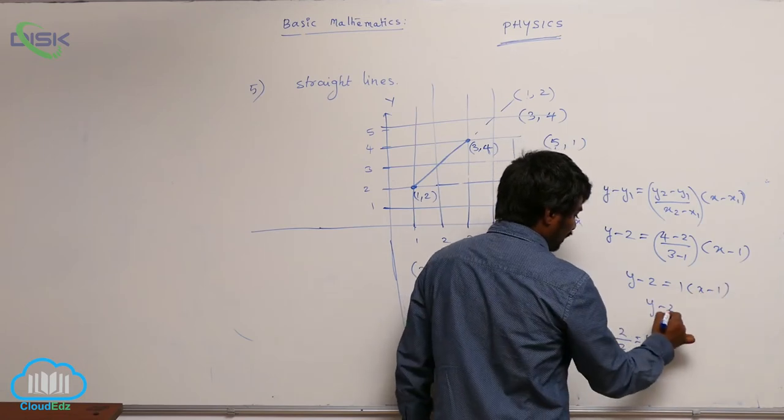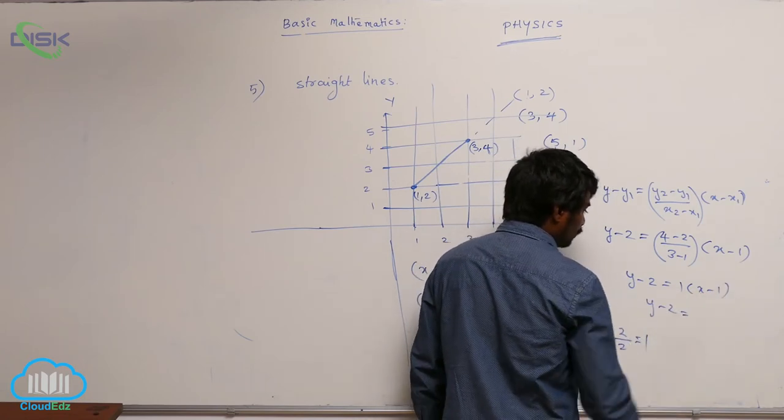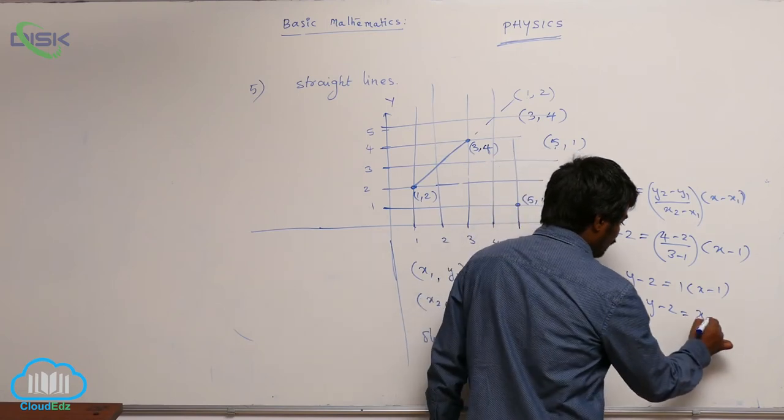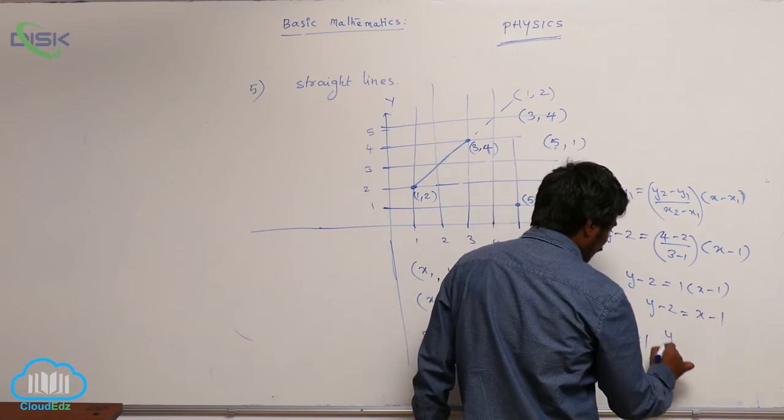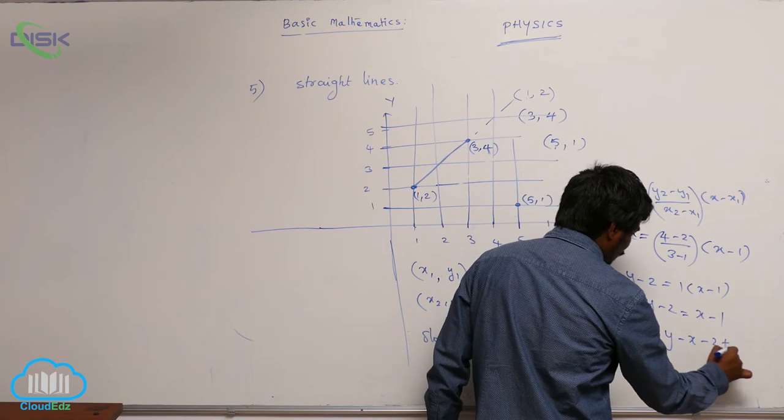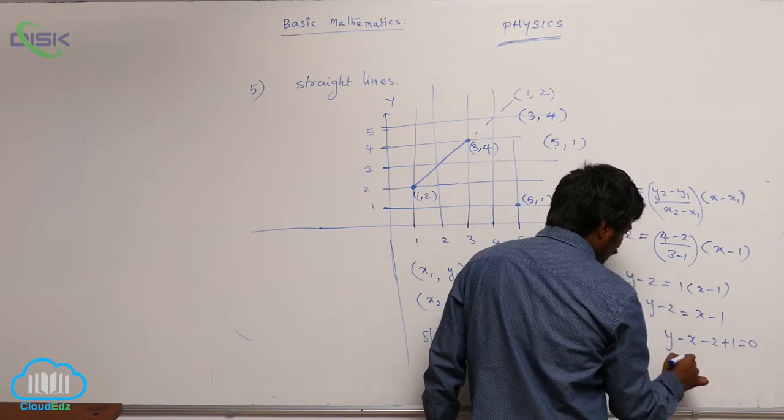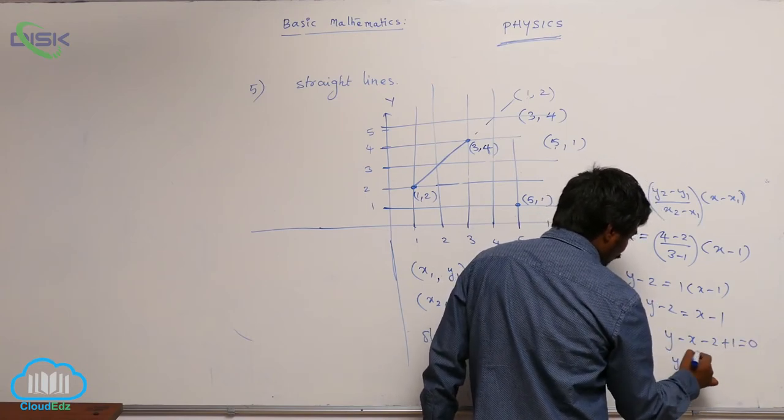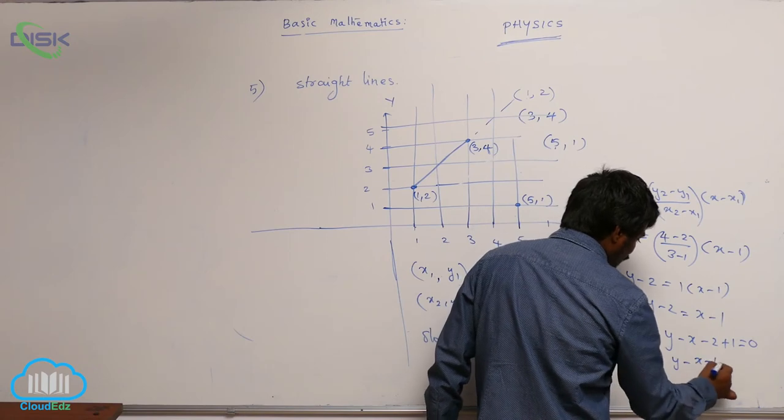So y minus 2 is equal to x minus 1. So y minus x minus 2 plus 1 is equal to 0. So y minus x minus 1 is equal to 0. This is the equation.